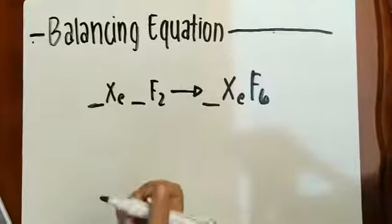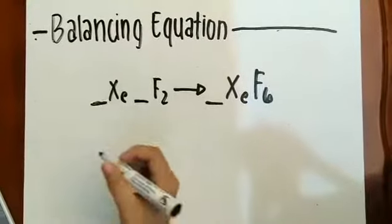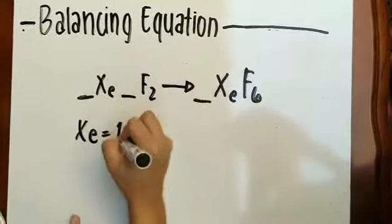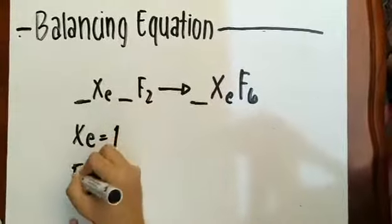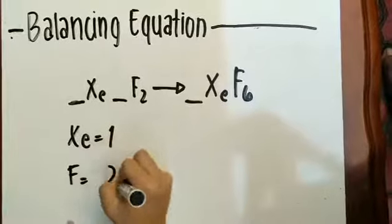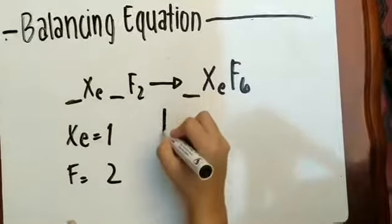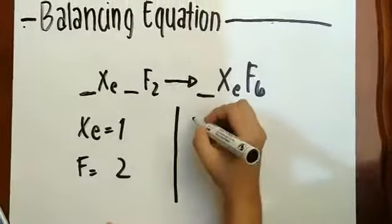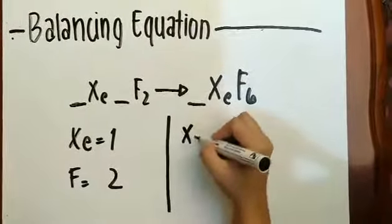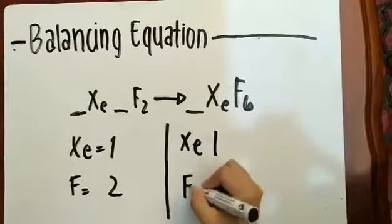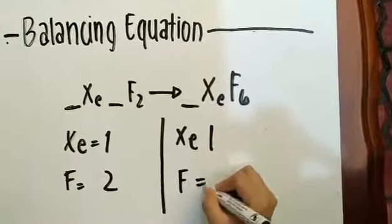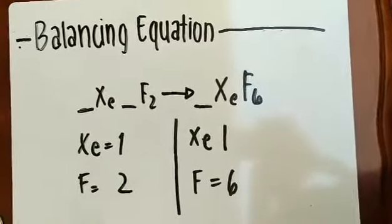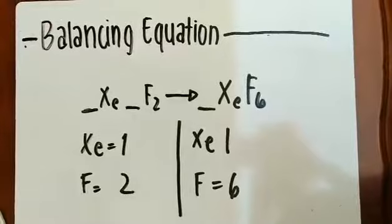We have to write down all the chemical reactions: xenon is equal to 1, fluorine is equal to 2 in the reaction. While in the product, xenon is equal to 1, fluorine is equal to 6. As you can see, both of them are not equal.